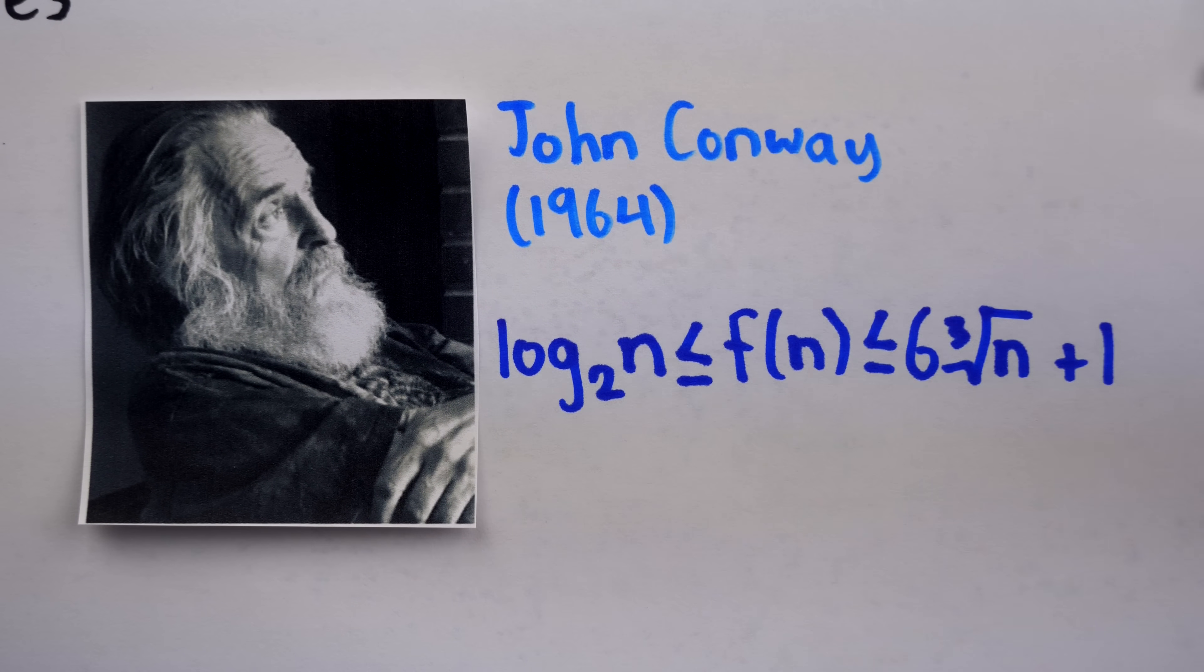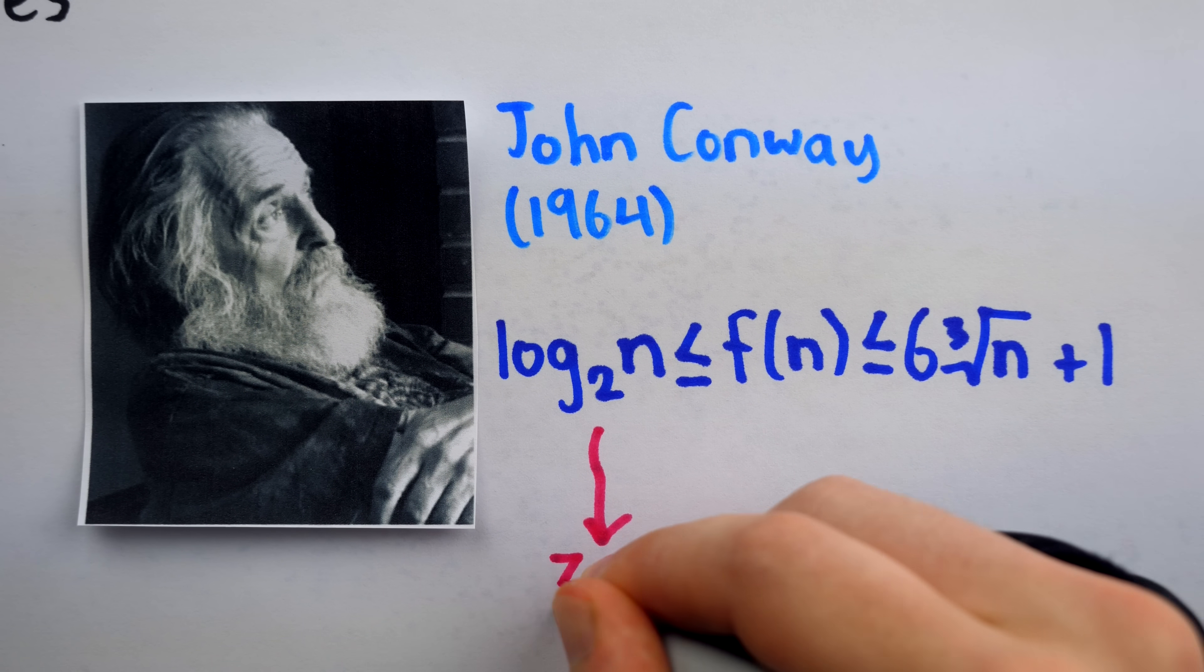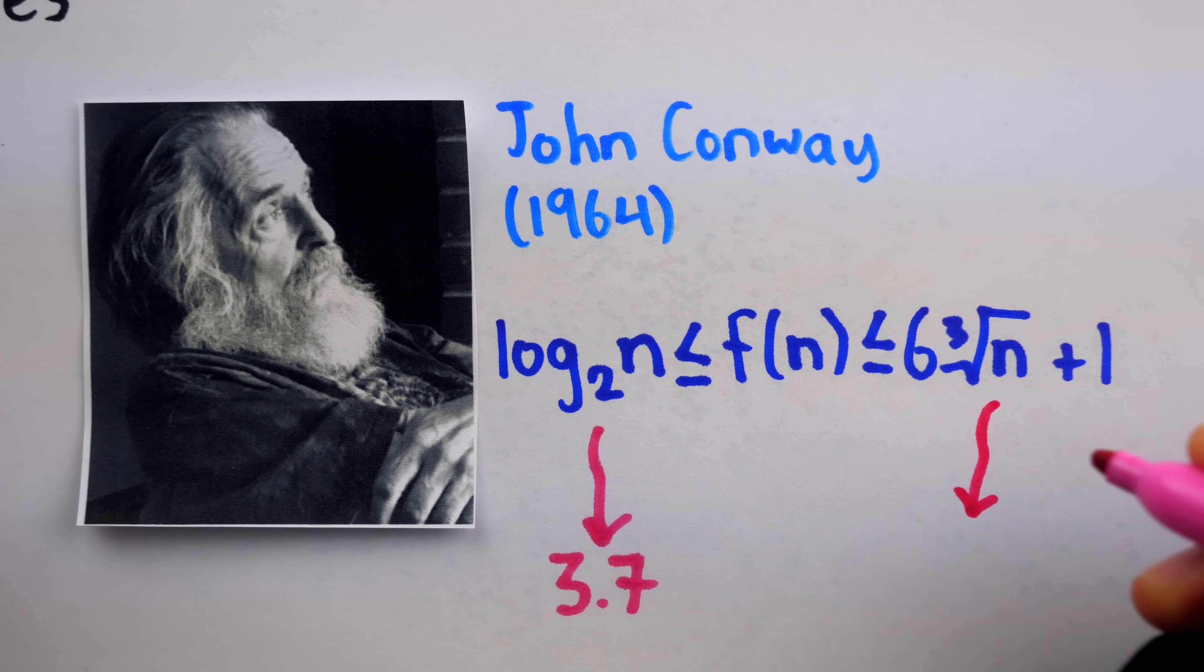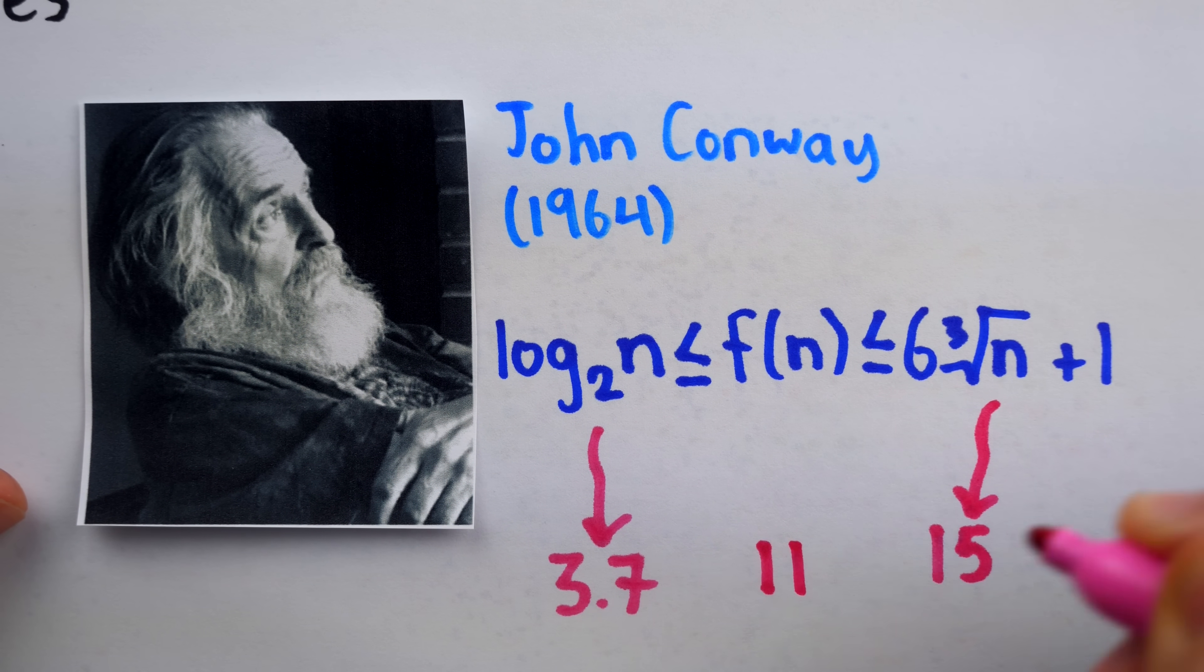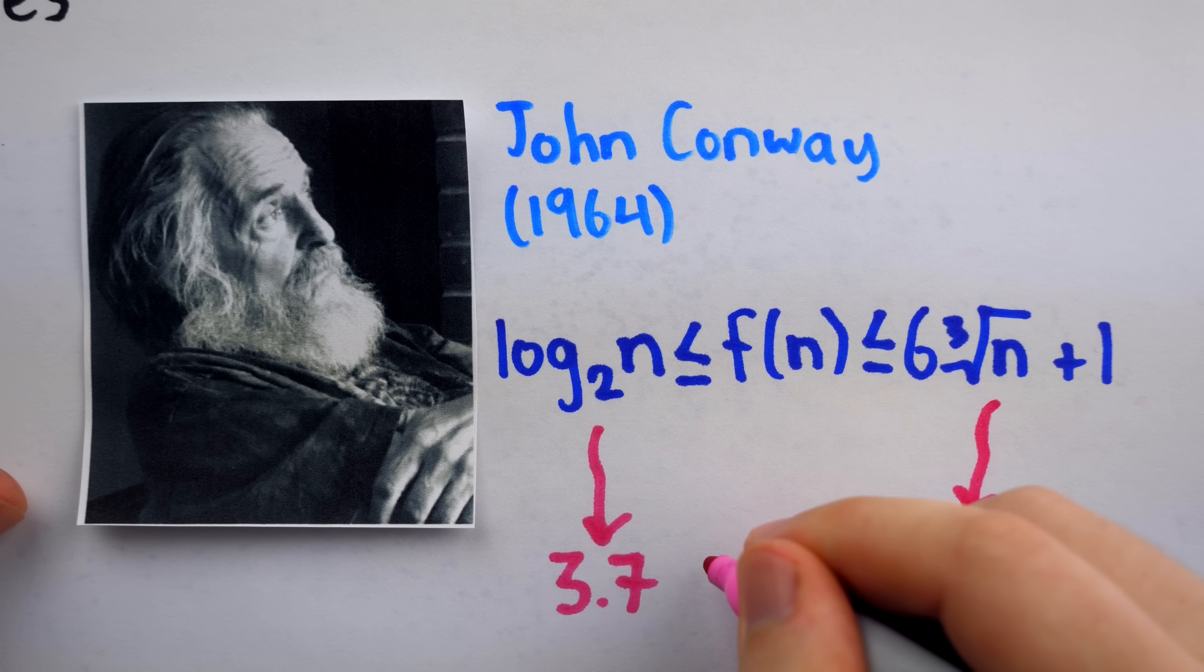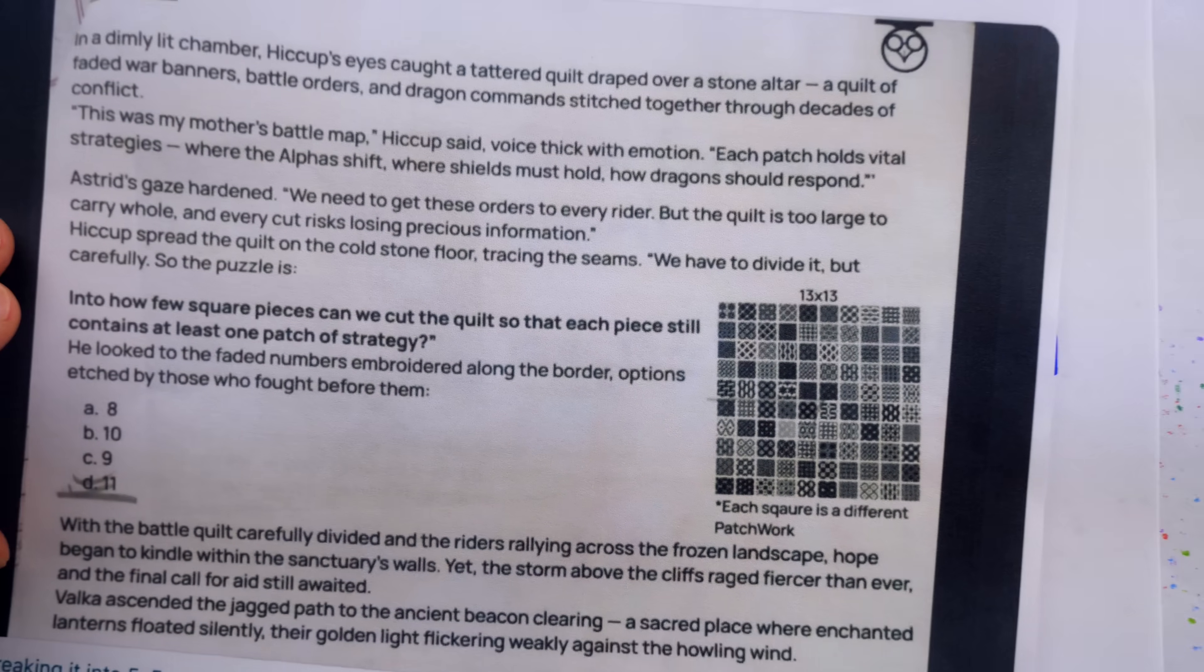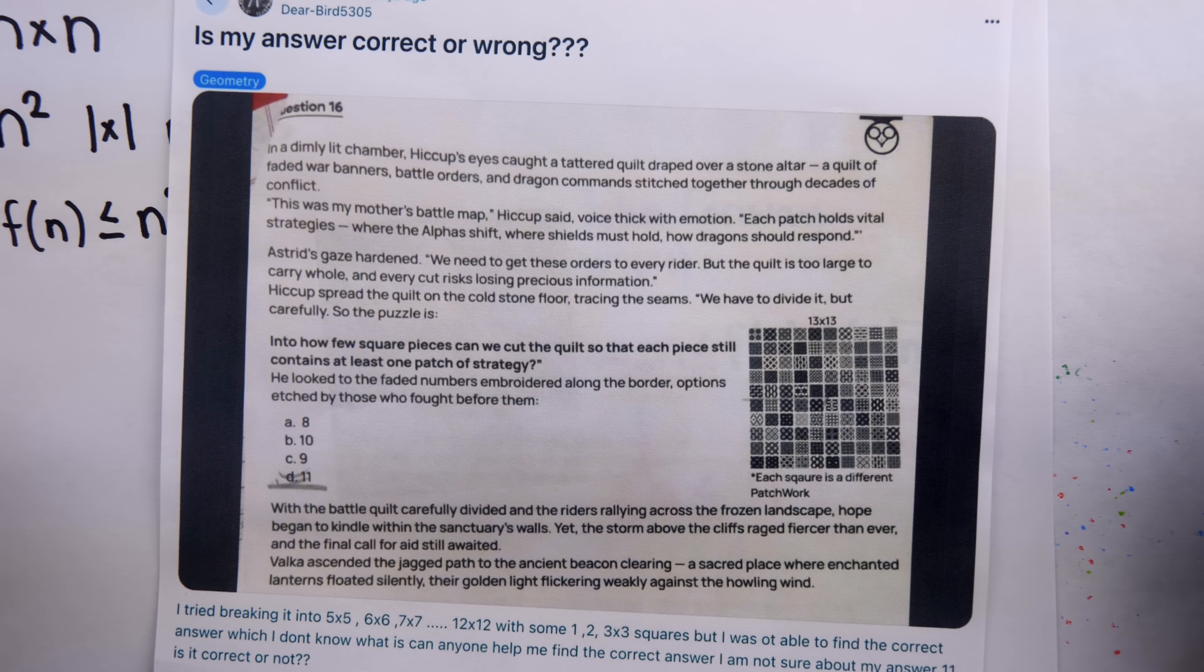Just as an example, when n equals 13, as in the origin of the Mrs. Perkins quilt problem, log base 2 of 13 is about 3.7, and 6 times the cube root of 13 plus 1 is about 15. And of course, we know that the true solution, f(13), is 11, and of course, 11 does satisfy the inequality. So there you go, a pretty ridiculous word salad math problem that happens to be an unusually difficult instance of a classic combinatorics puzzle.